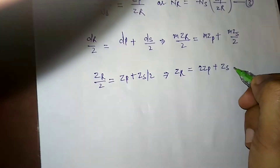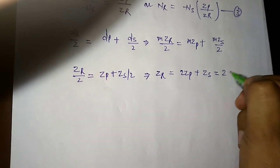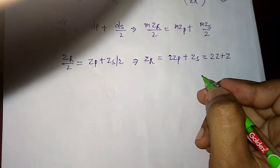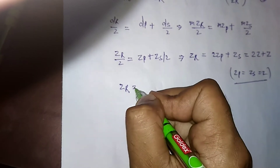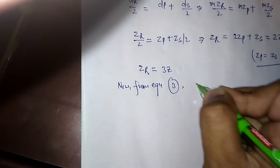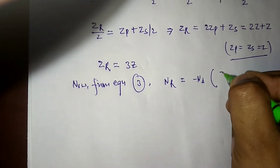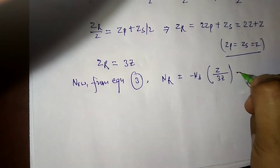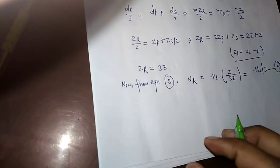Since Zp and Zs are identical, let Zp = Zs = Z. Then Zr = 2Z + Z = 3Z. Substituting into equation 3: NR = (Z/3Z) × NS = NS/3, but with the sign from the chain giving NR = -NS/3. This is equation 4.